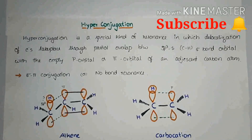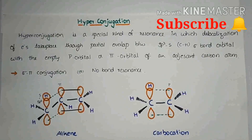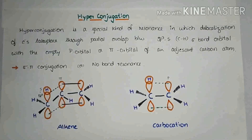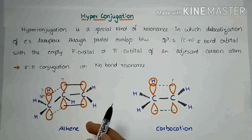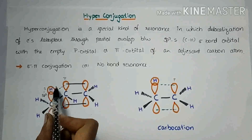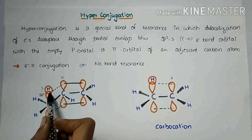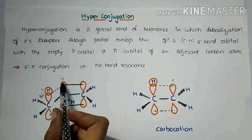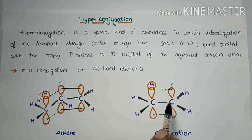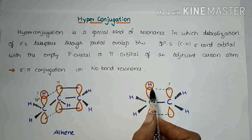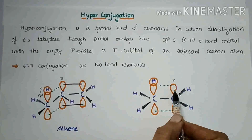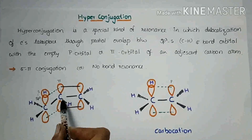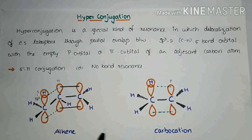Hyperconjugation is a special kind of resonance in which delocalization of electrons takes place through partial overlap between sp3 sigma bond orbital and pi orbital, or sp3 sigma bond orbital with an empty p orbital of an adjacent carbon atom. This is known as hyperconjugation effect.